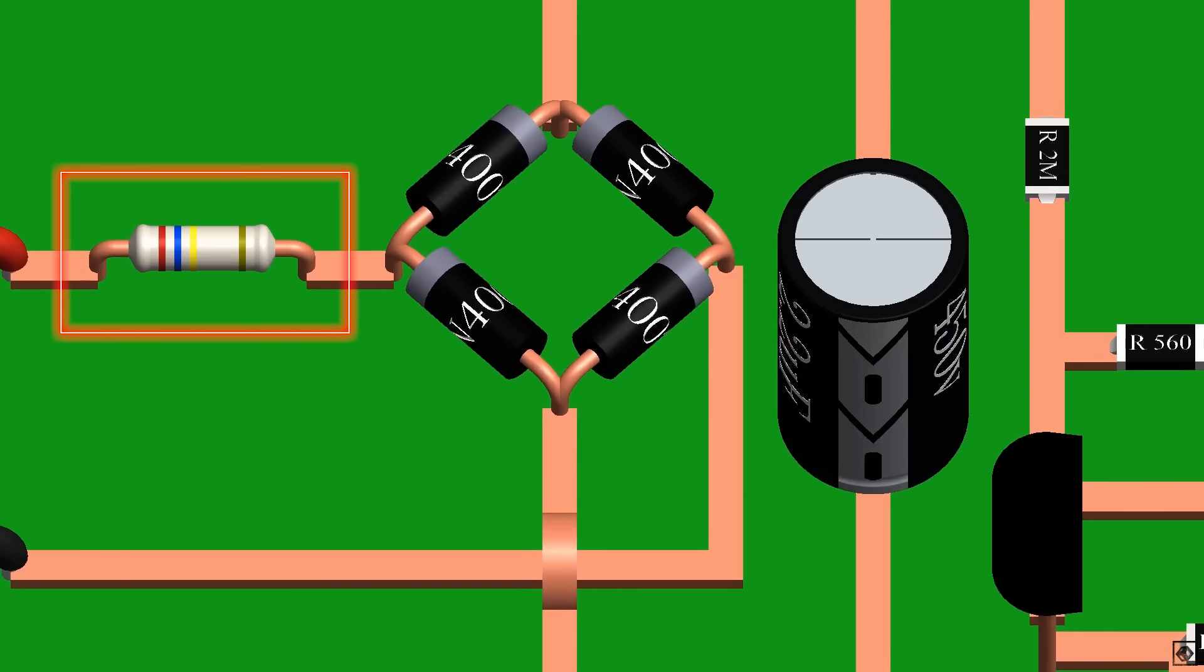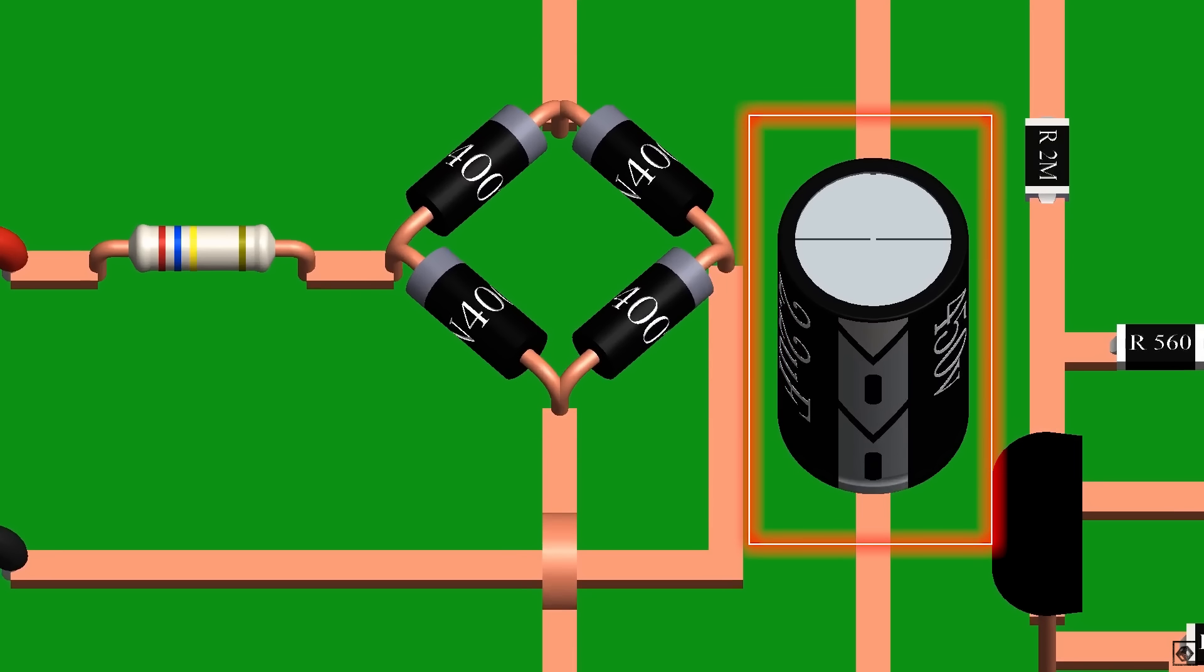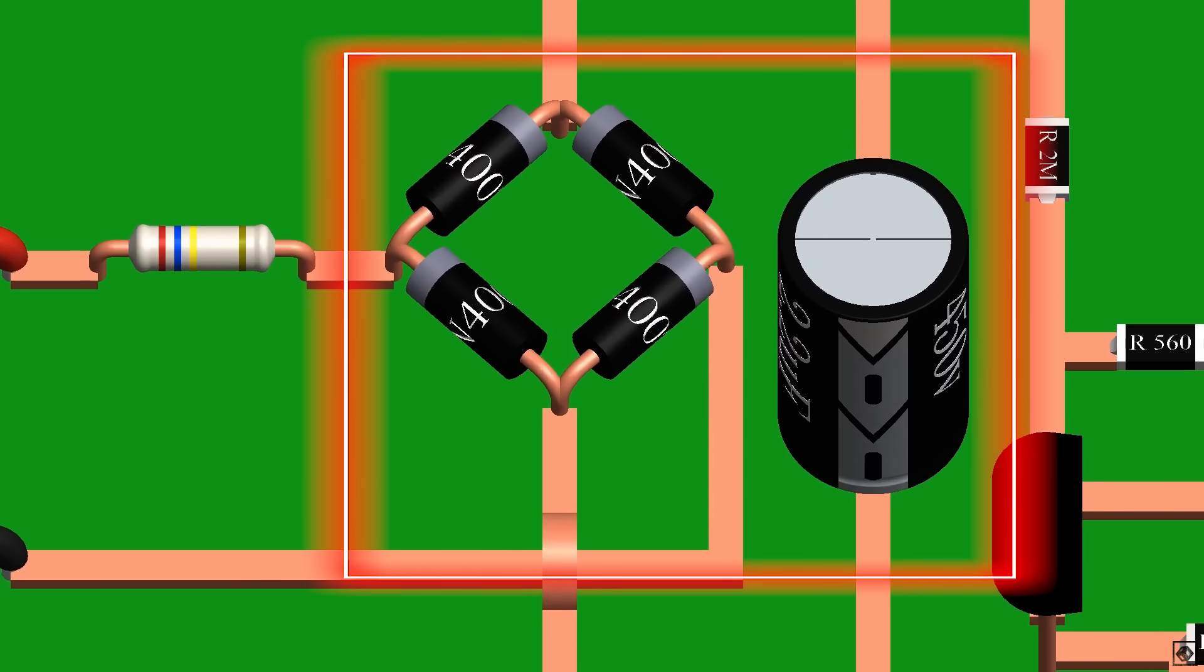This is a fusible resistor which prevents damage from overloading. Then there is a bridge rectifier made by four 1N4007 diodes, and a filter capacitor of 450 volts and 2.2 microfarad. This circuit converts AC to DC.